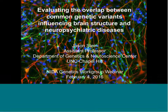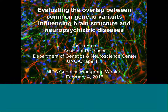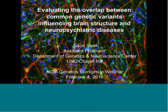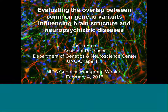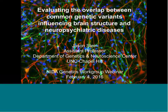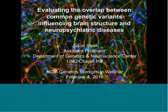Hi, this is Jonathan Pollock at the National Institute on Drug Abuse. I'd like to introduce Dr. Jason Stein, who is Assistant Professor in the Department of Genetics and Neuroscience Center at the University of North Carolina at Chapel Hill. Jason Stein received his Bachelor of Arts at Northwestern University, then his PhD at UCLA, did his thesis work with Dr. Paul Thompson, and then did post-doctoral work with Dan Geschwind at UCLA. He will now talk about evaluating the overlap between common genetic variants influencing brain structure and neuropsychiatric disease.